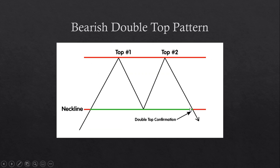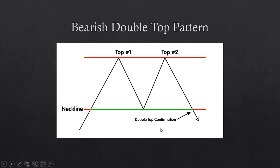The double top pattern is used when the market is in an uptrend. A top or high is formed, and two tops — or two highs — are created. The neckline is used for confirmation to say that yes, we have changed direction and are now going into a downtrend.